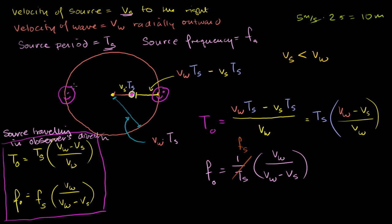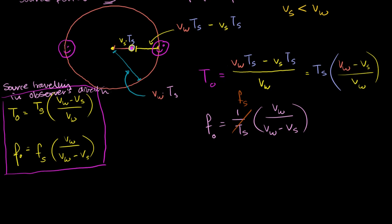Now let's think about the opposite case, where the source is traveling away from the observer — the observer is the guy over there, shown in blue. When we started off, the source was right here. After exactly one period from the source's point of view, that first crest emitted has traveled radially outward a distance of v_w times the period. The source of the wave will have traveled to the right a distance of v_s times the period. So that first crest is just passing the observer, and the source is about to emit another wave right now.